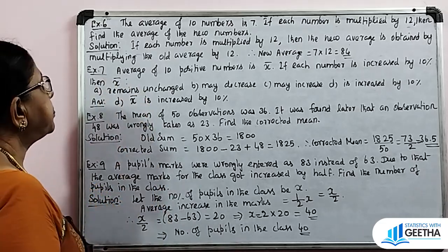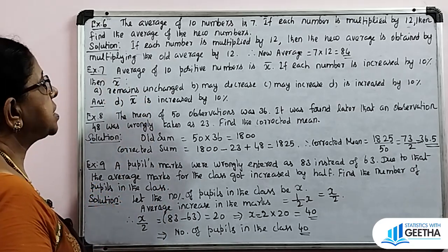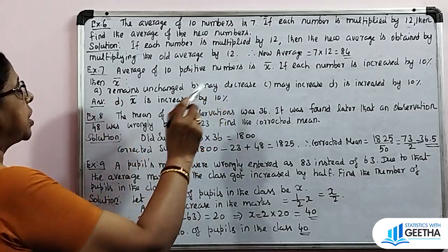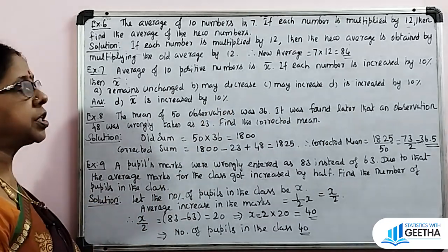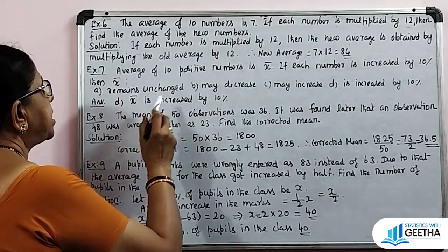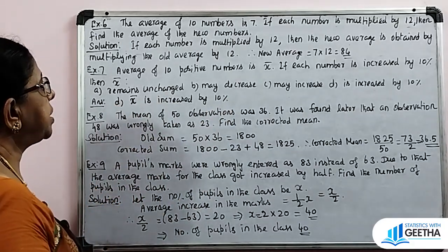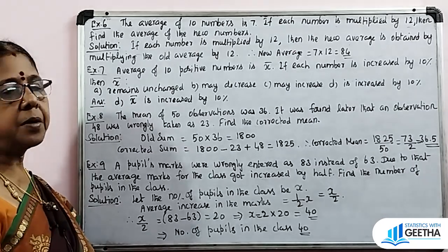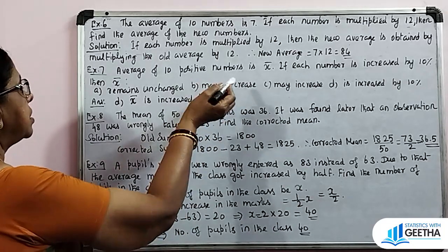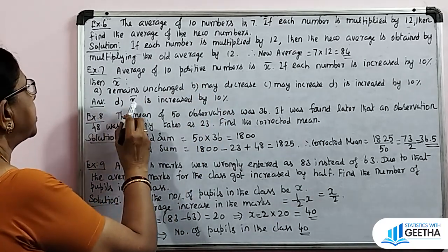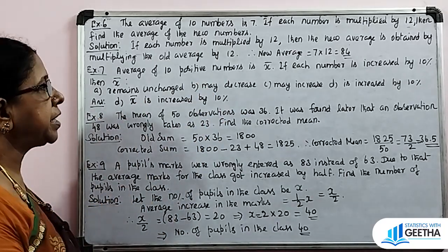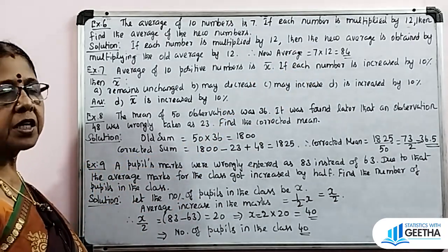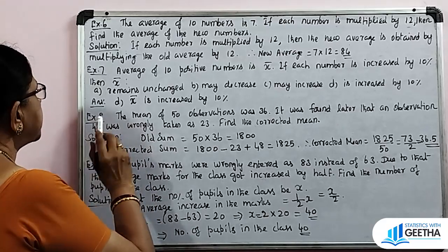Exercise number 7: The average of 10 positive numbers is X bar. If each number is increased by 10%, then X bar is also increased by 10%.